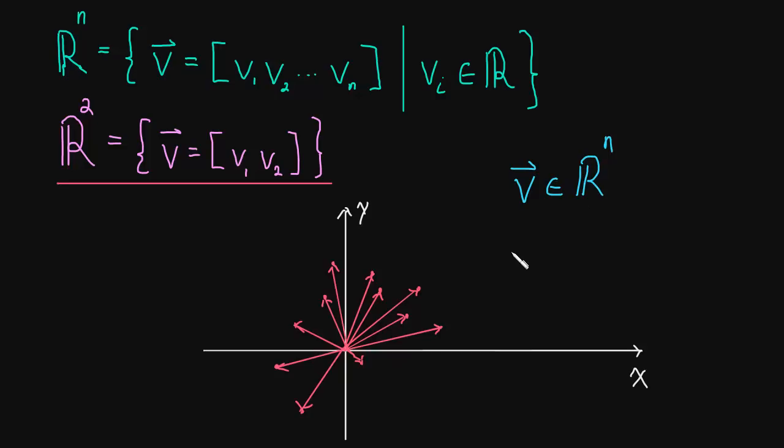And this should mean to you that v has n components. So this here underlined in pink now is a really nice way of just saying that v has n components.